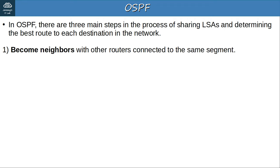Now let's cover some basic OSPF configurations using the same network topology as for RIP and EIGRP. For the CCNA you only need to configure single-area OSPF, with all interfaces in area 0. To enter OSPF configuration mode, use the command ROUTER OSPF followed by a process ID. A router can run multiple OSPF processes at once and this ID identifies each. Typically you'll use a single OSPF process — I chose process ID 1.